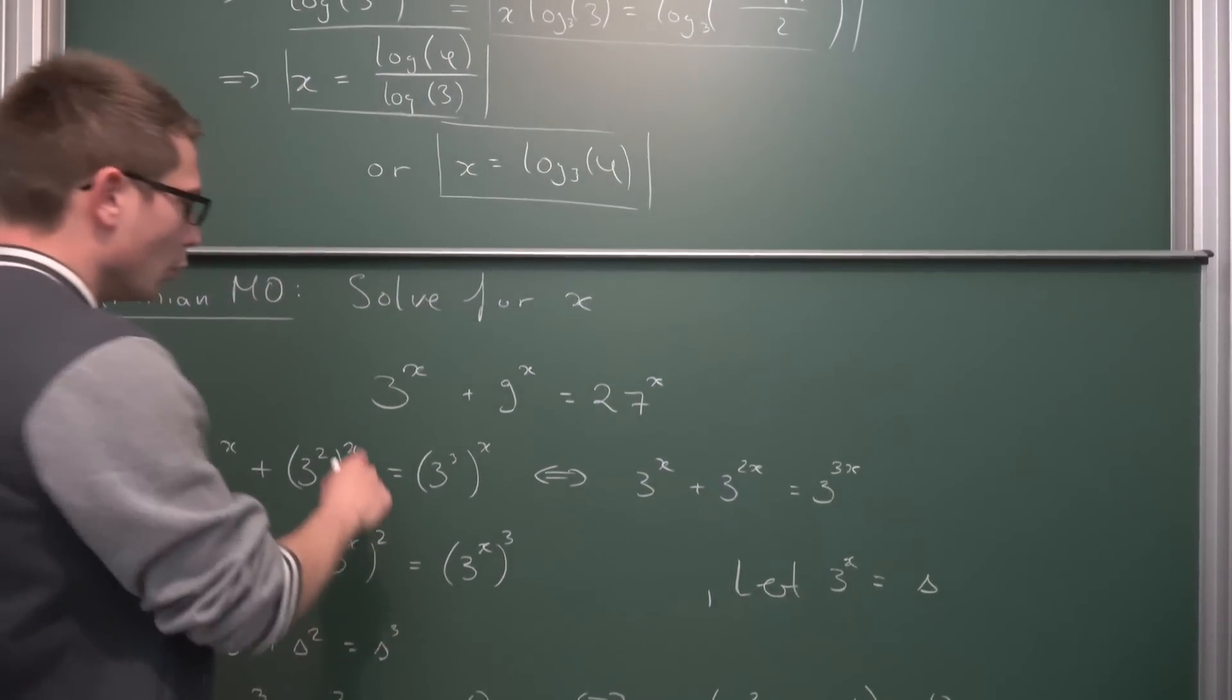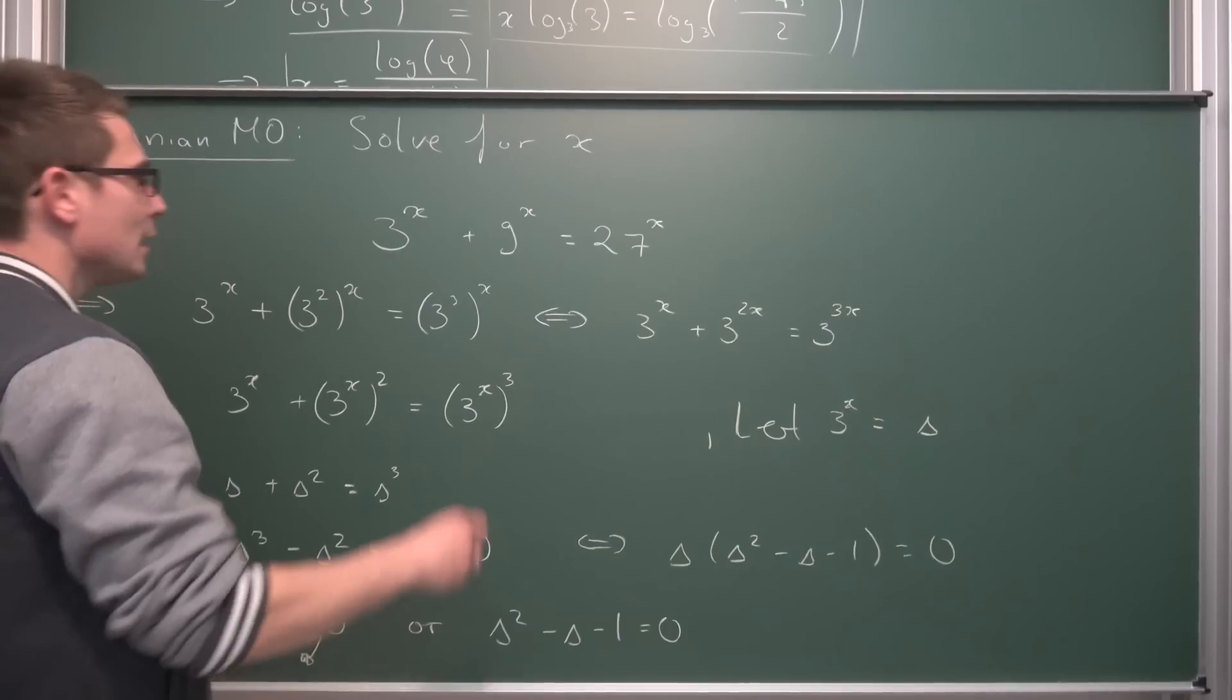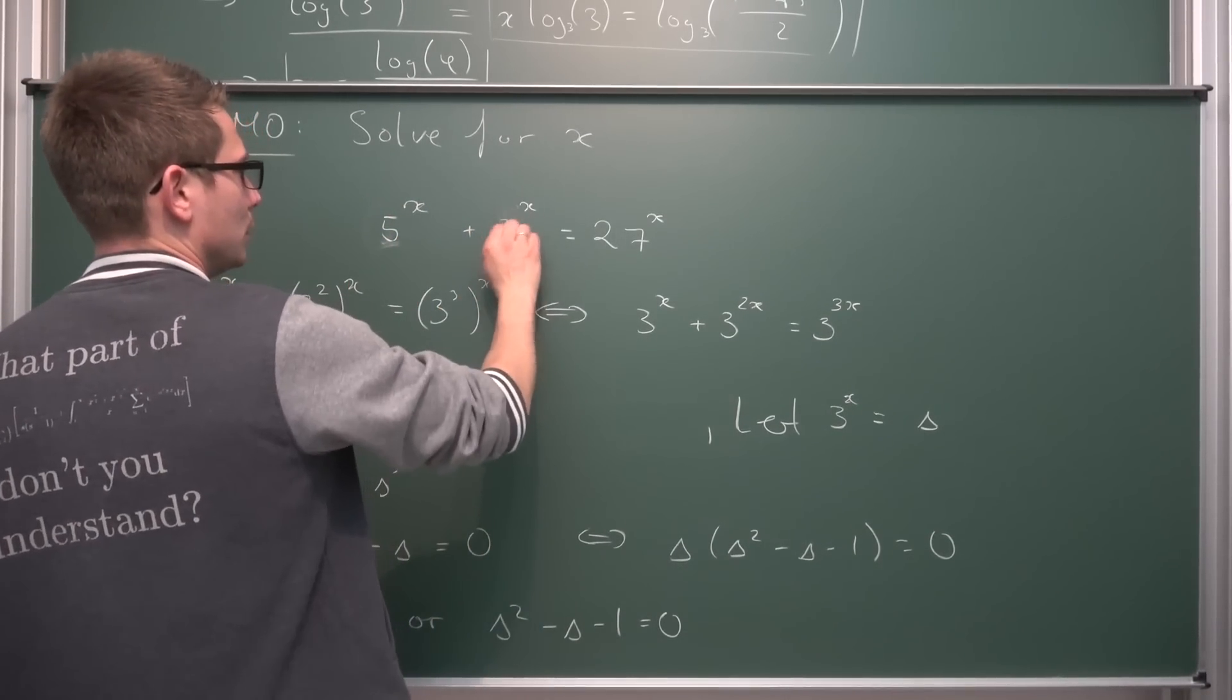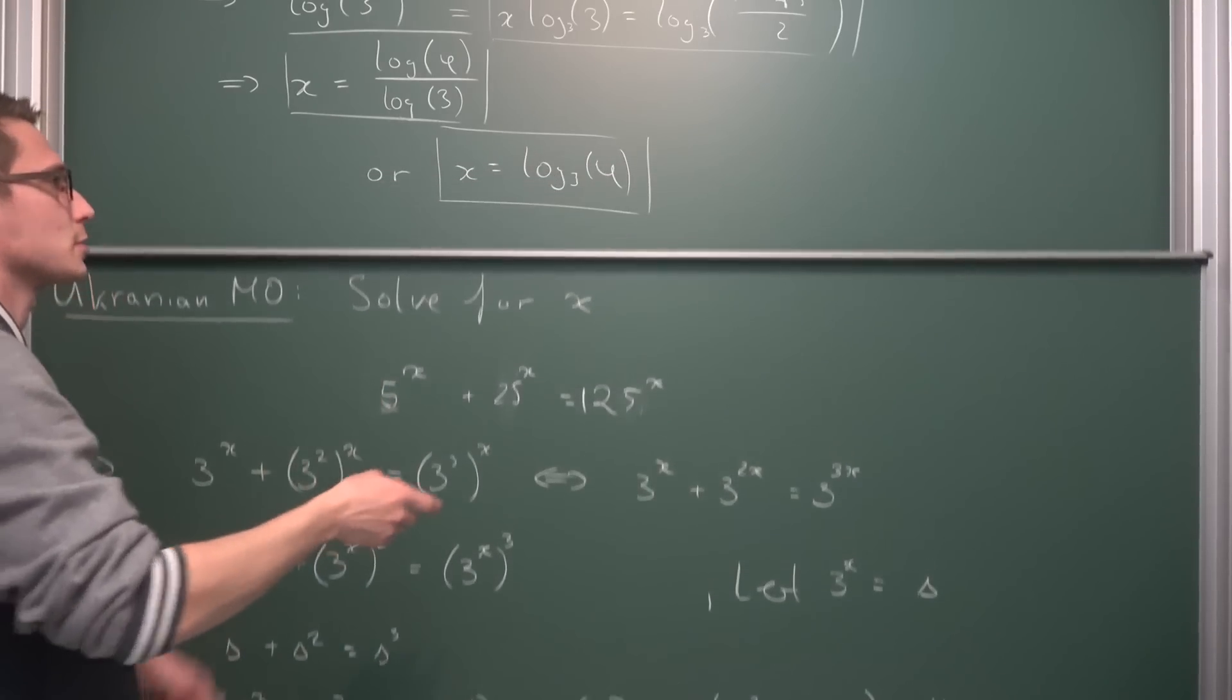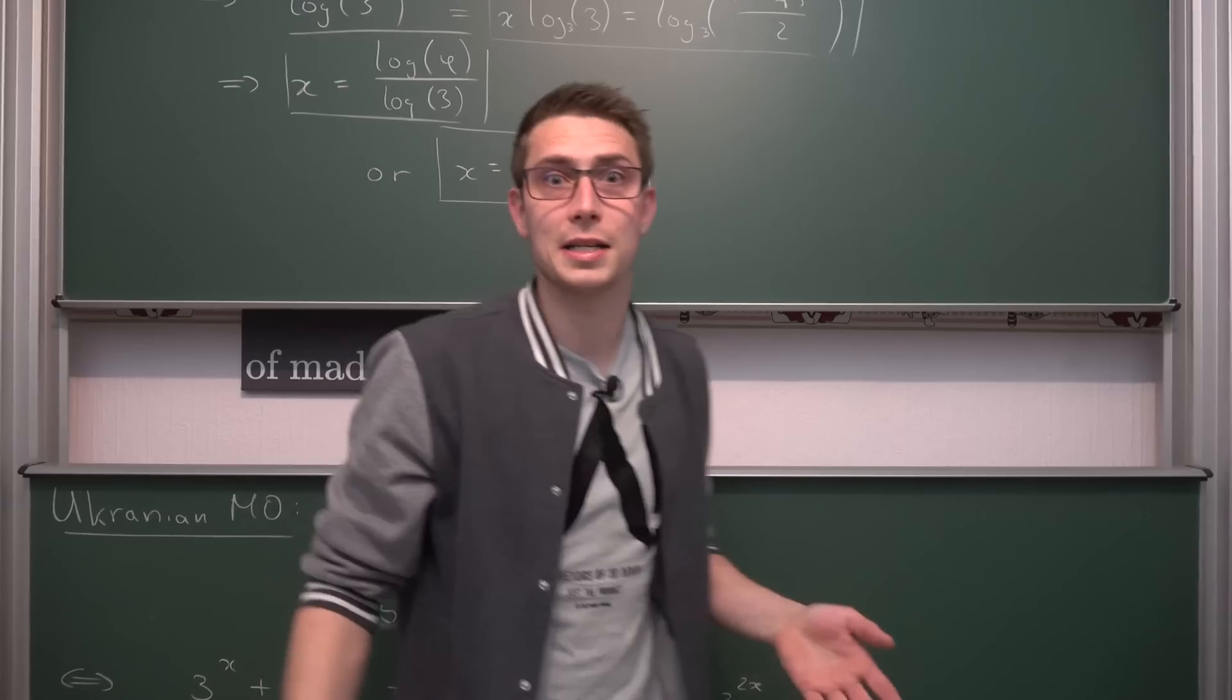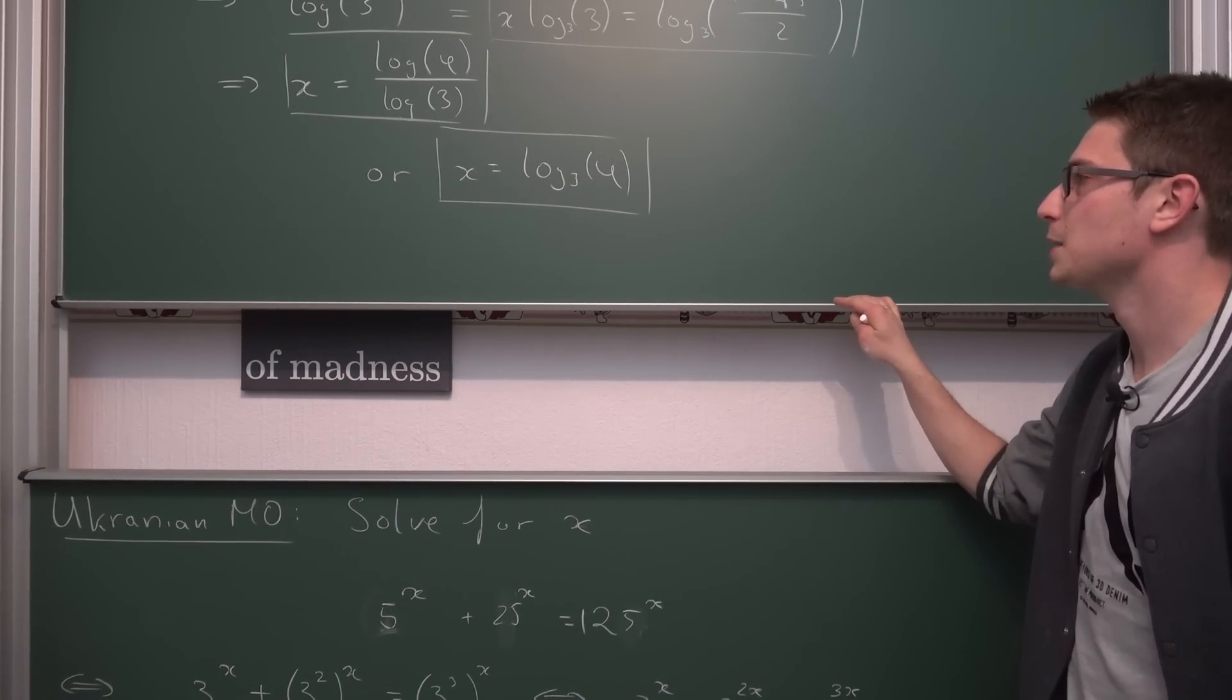So you can take any other power of three or four or five or whatever here. For example, if we take five then, 125 if I'm not mistaken, then this right here is going to have the solution x is equal to log base five of phi, for example, which is very nice. I really like this. Makes also for a very nice party trick.